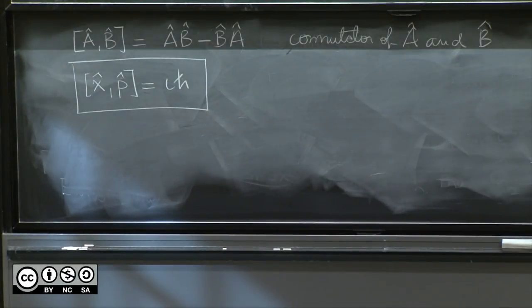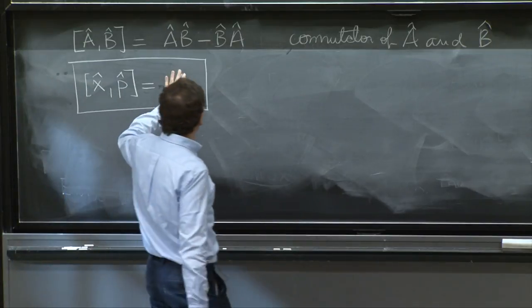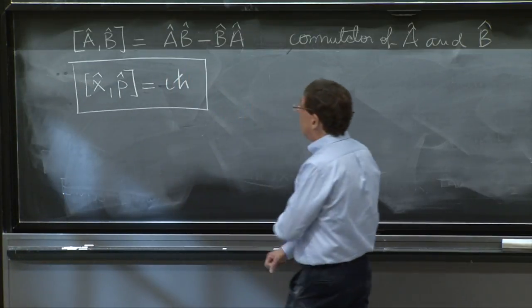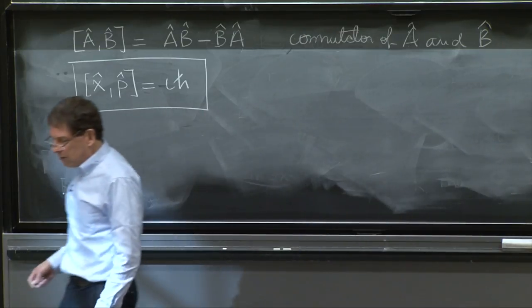This is very important. This is the beginning of the uncertainty principle, the matrix formulation of quantum mechanics, and all those things. I want to just tabulate the information of matrices.